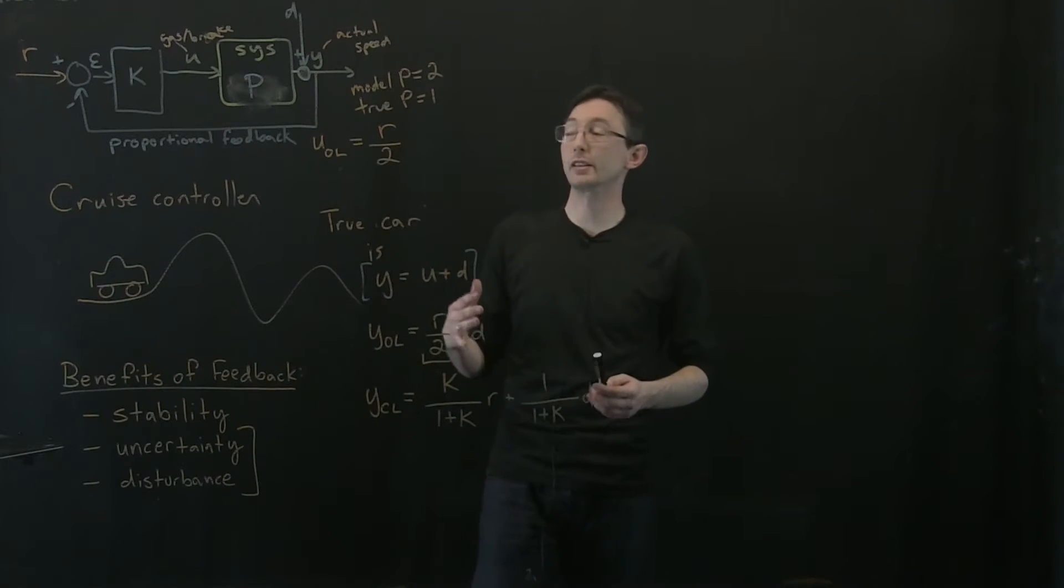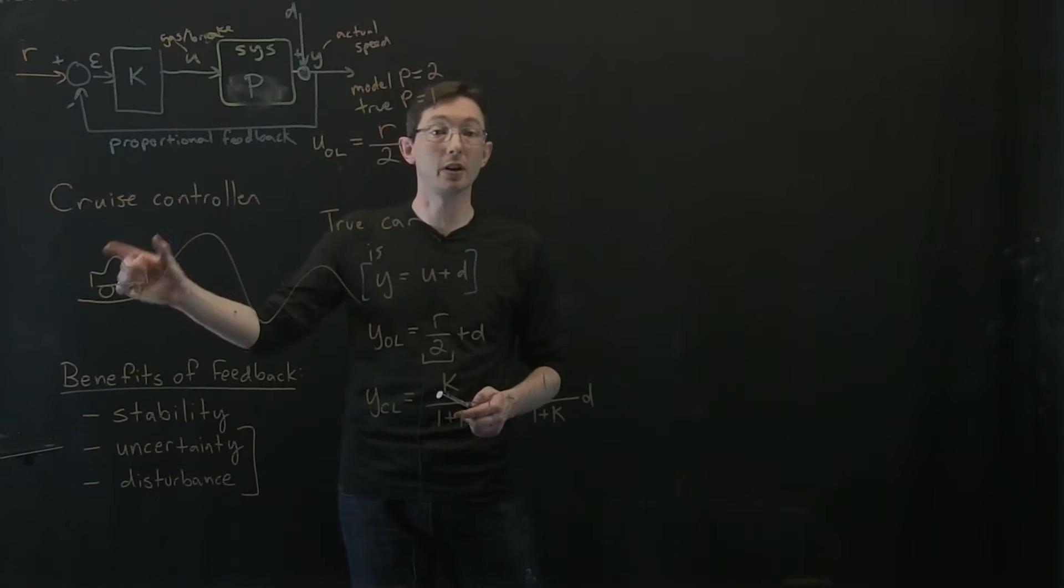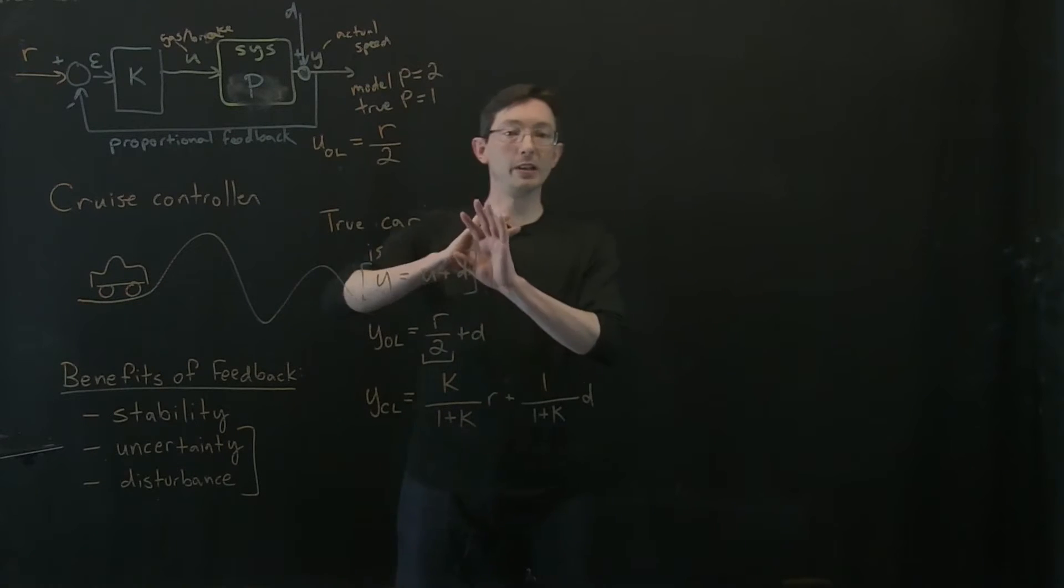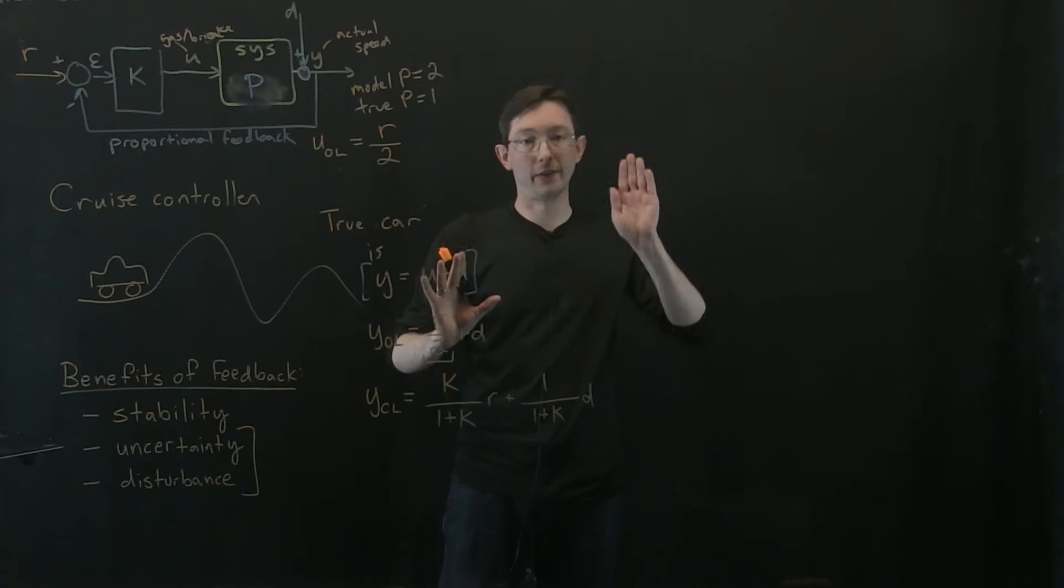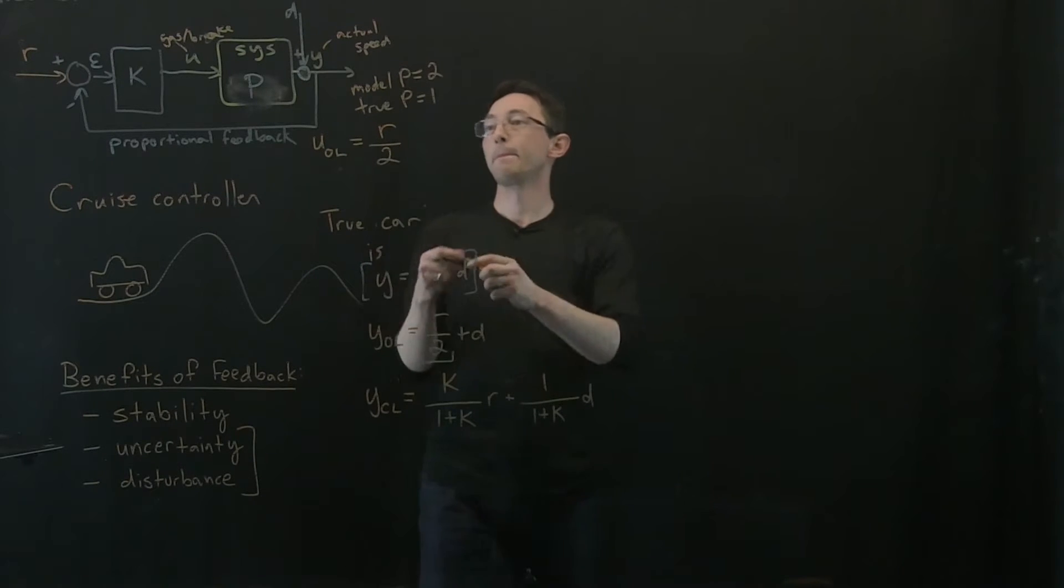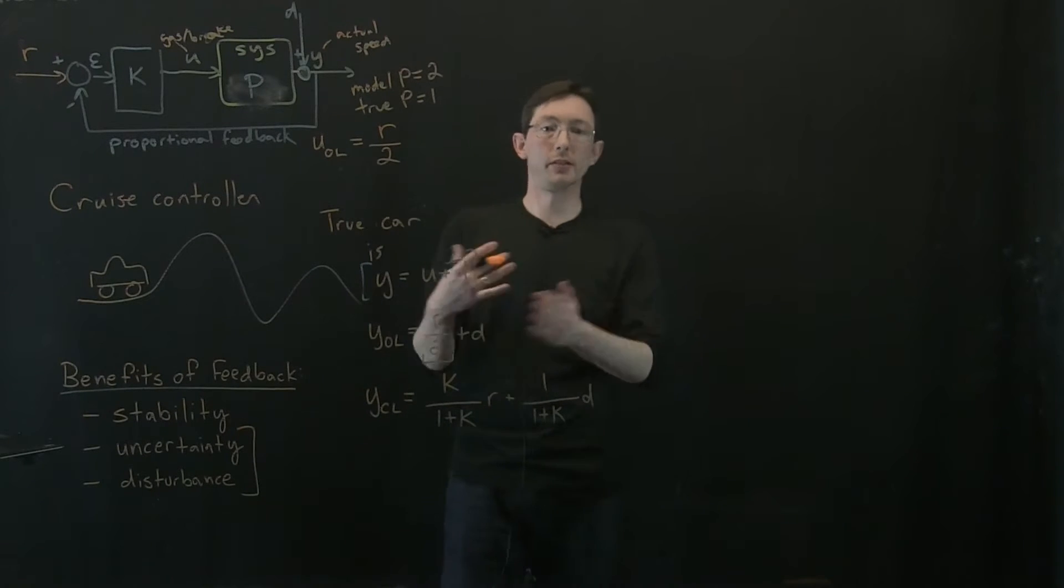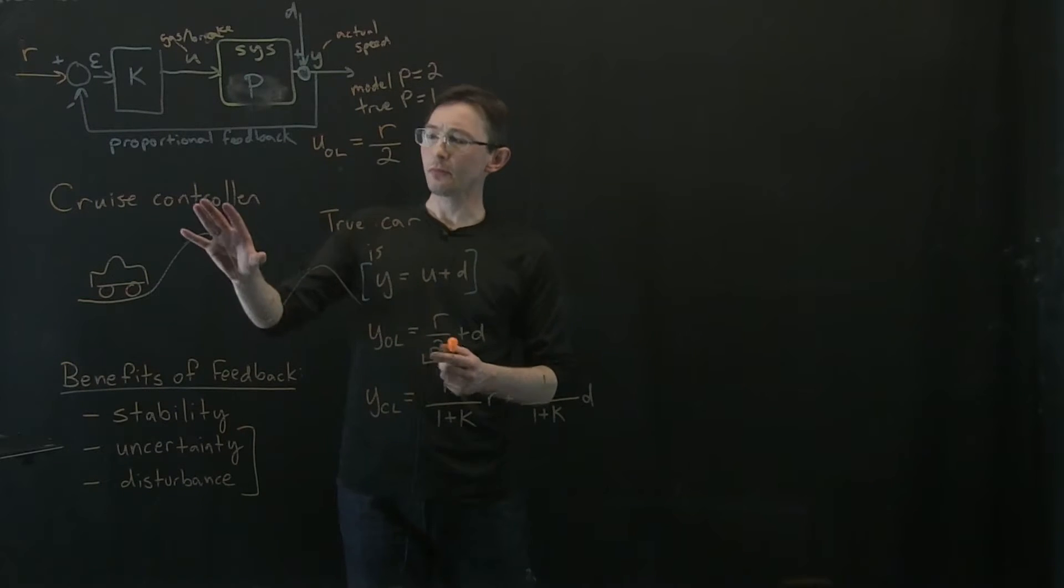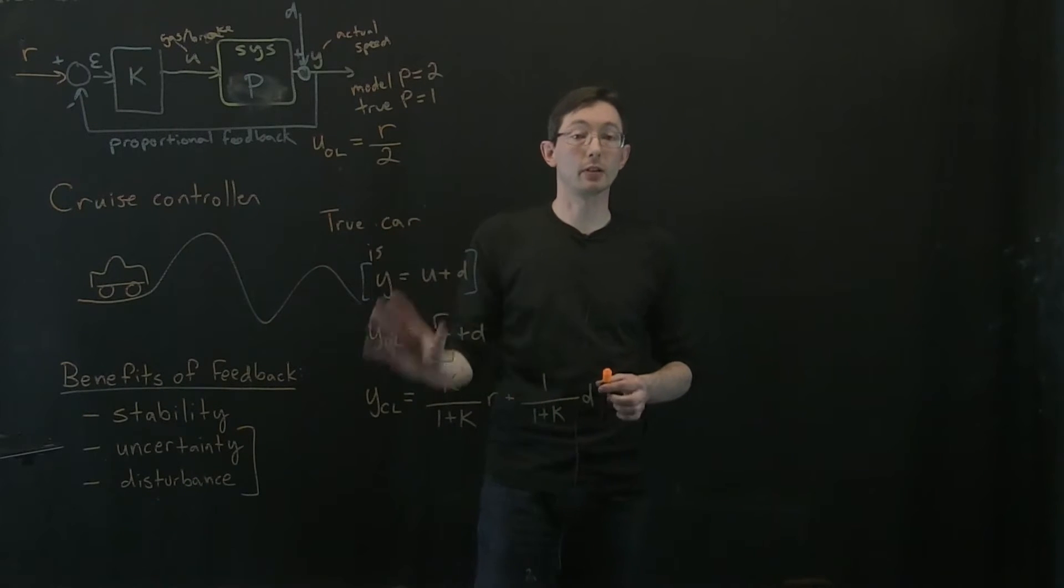And so to illustrate this, we're looking at a simple model for a car's cruise controller where we're assuming just the simplest dynamics of the car. If I hit the gas, the car speeds up instantaneously. If I hit the brakes, the car slows down instantaneously. And we're comparing the open loop and the closed loop controllers.